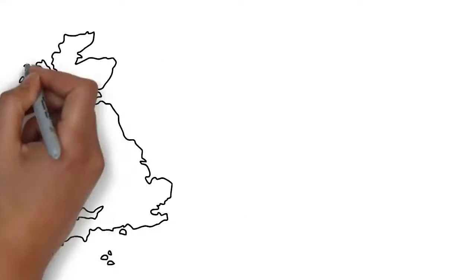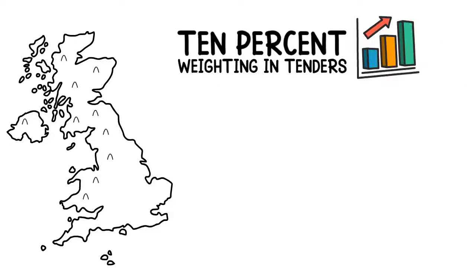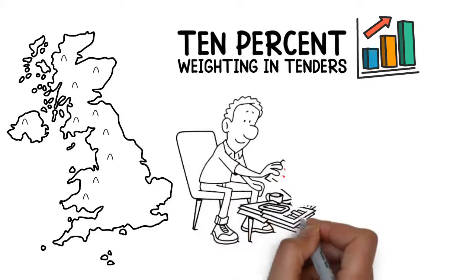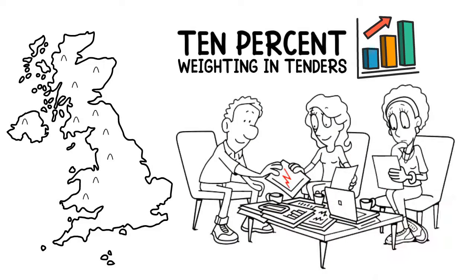In the UK, you will frequently see a 10% weighting in tenders for your ESG performance, and entire supply chains are forcing uptake in ESG reporting. Even the smallest firms are feeling the pressure.